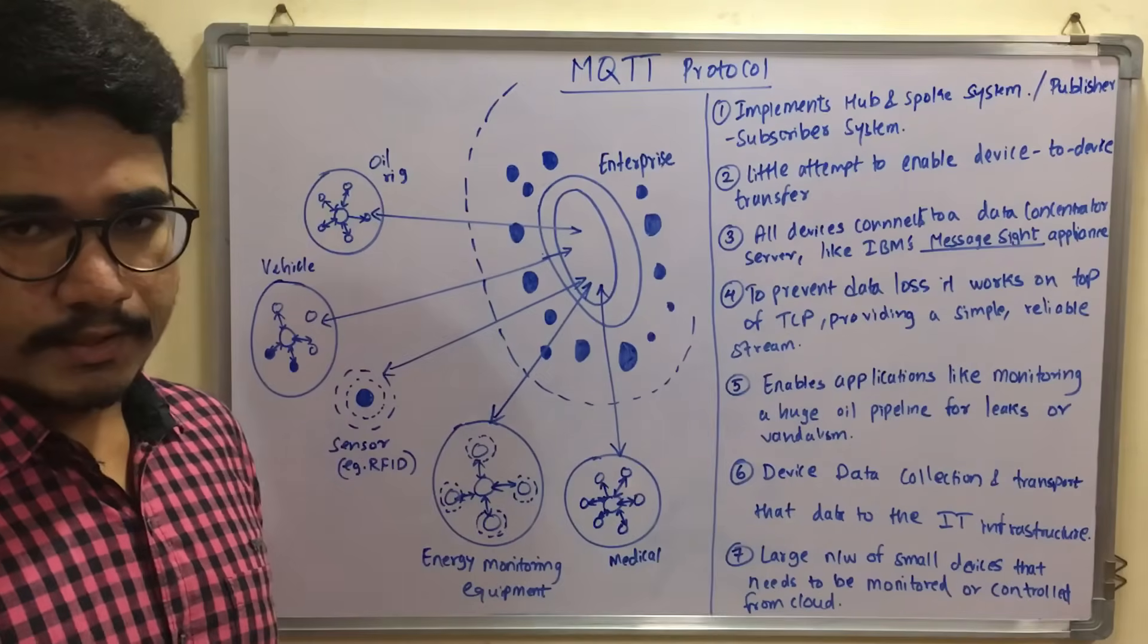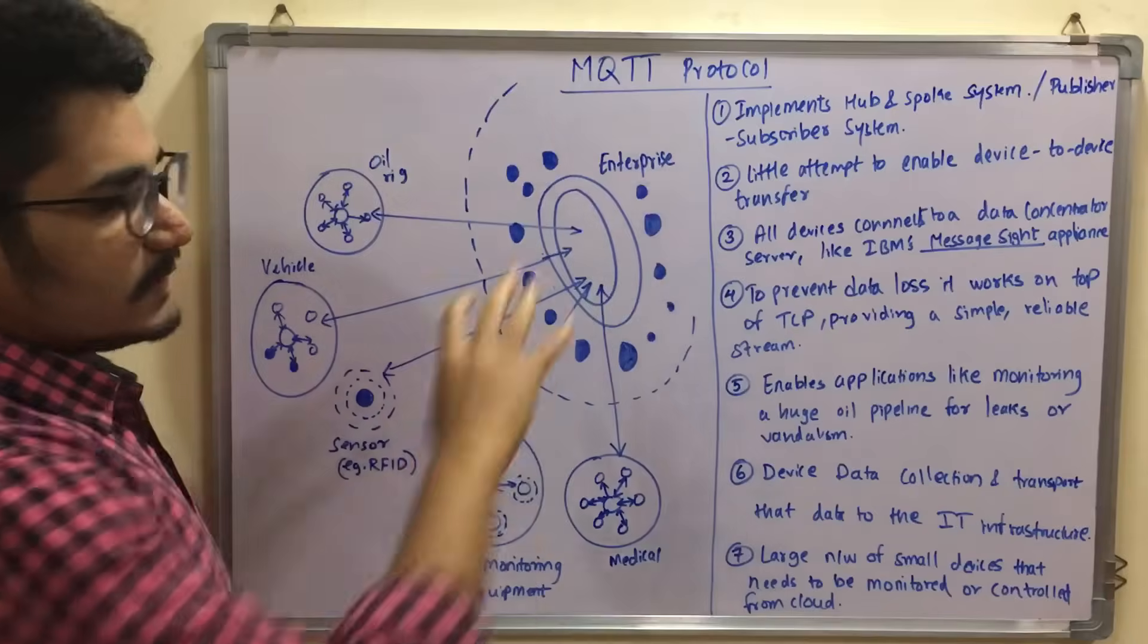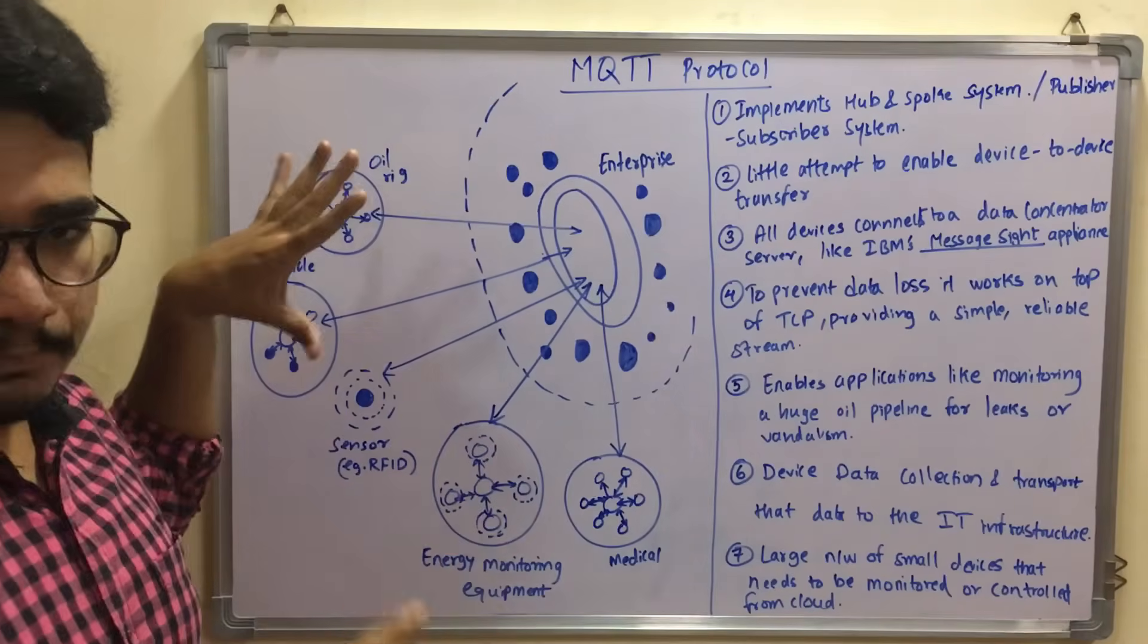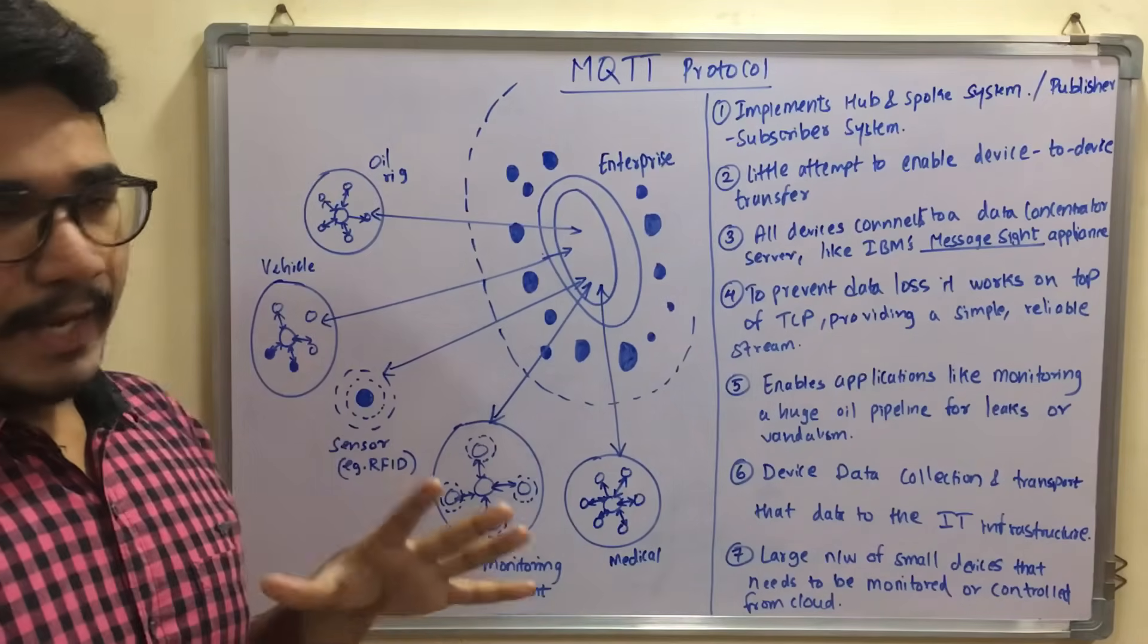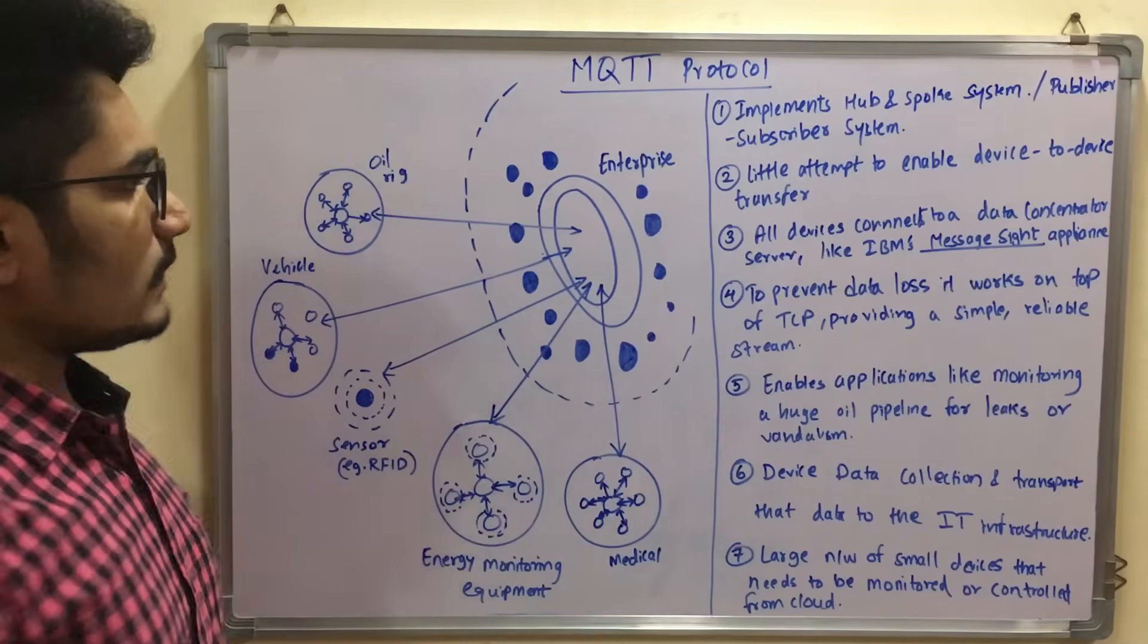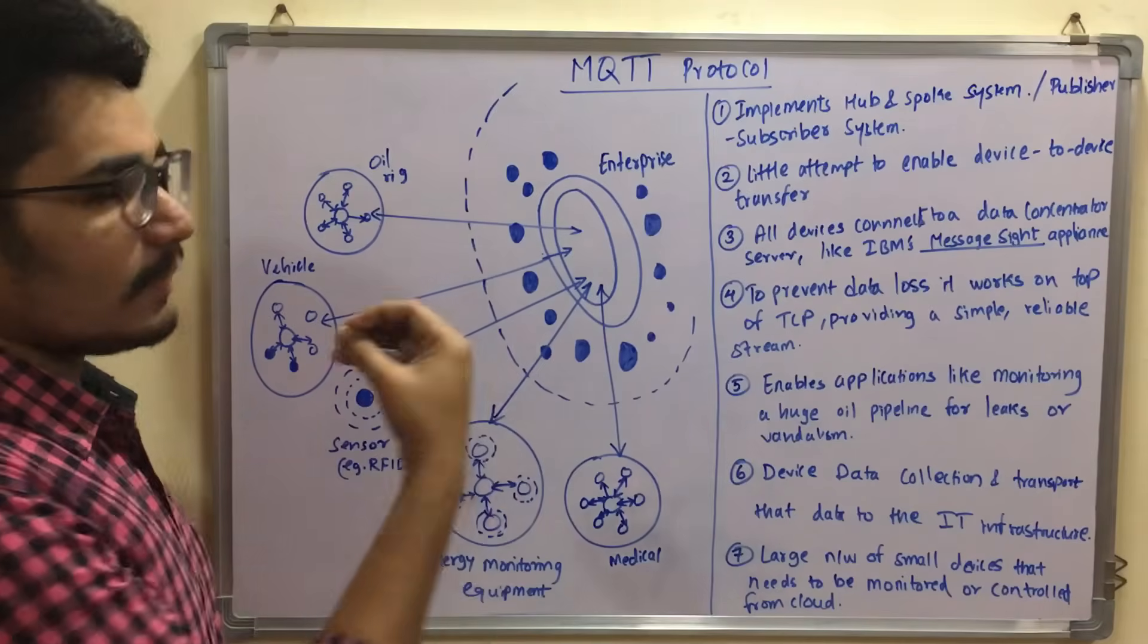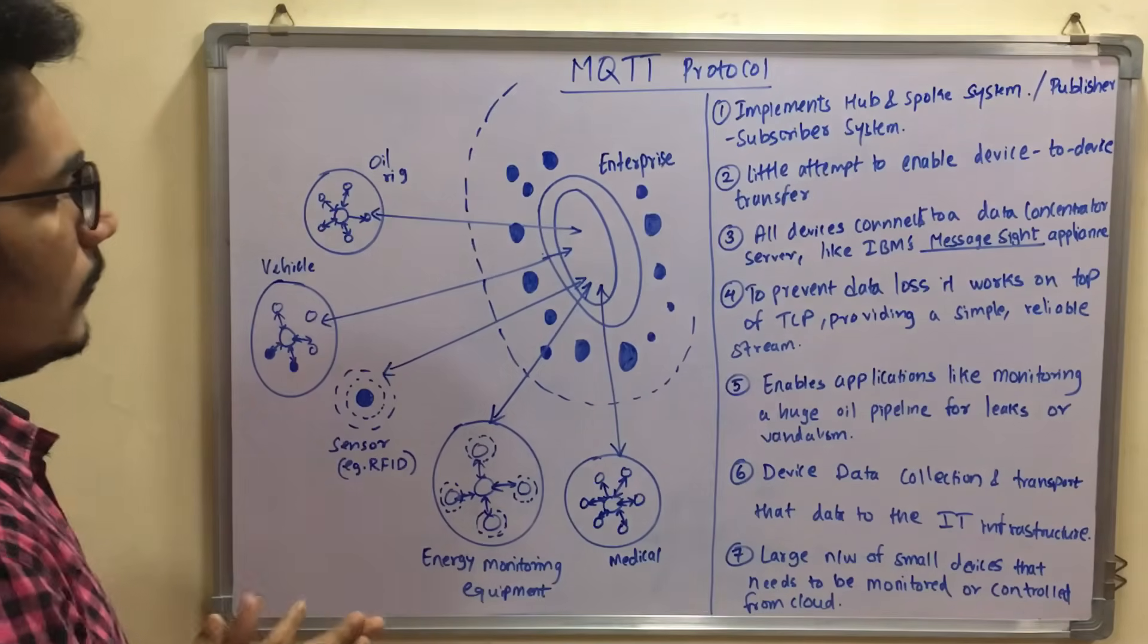Basically we have this setup or architecture which is the block diagram of the MQTT and this functions in IoT as a major protocol. Let us understand why MQTT is the major protocol used in IoT and what are its benefits and how it functions.